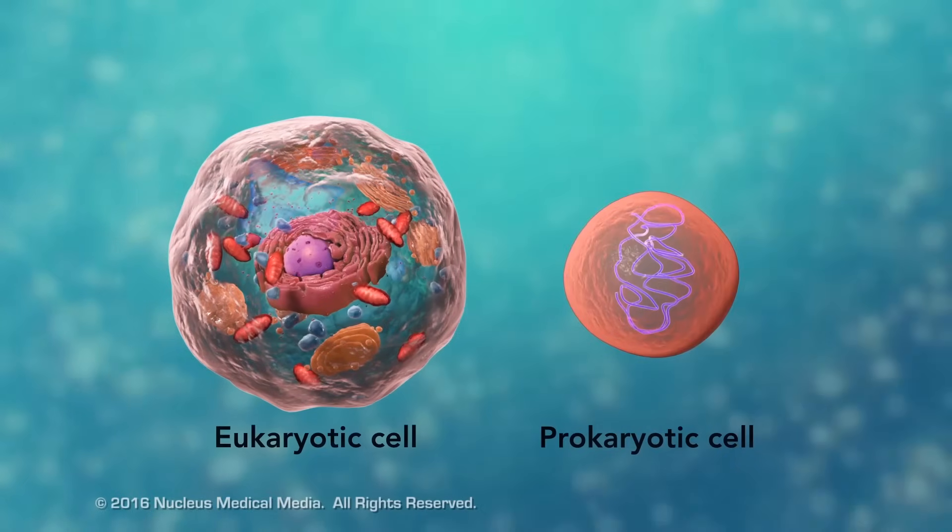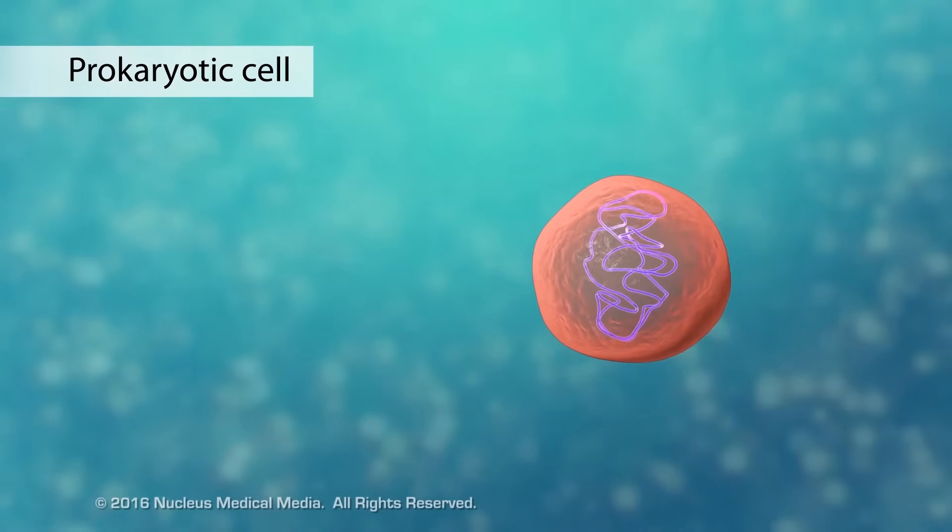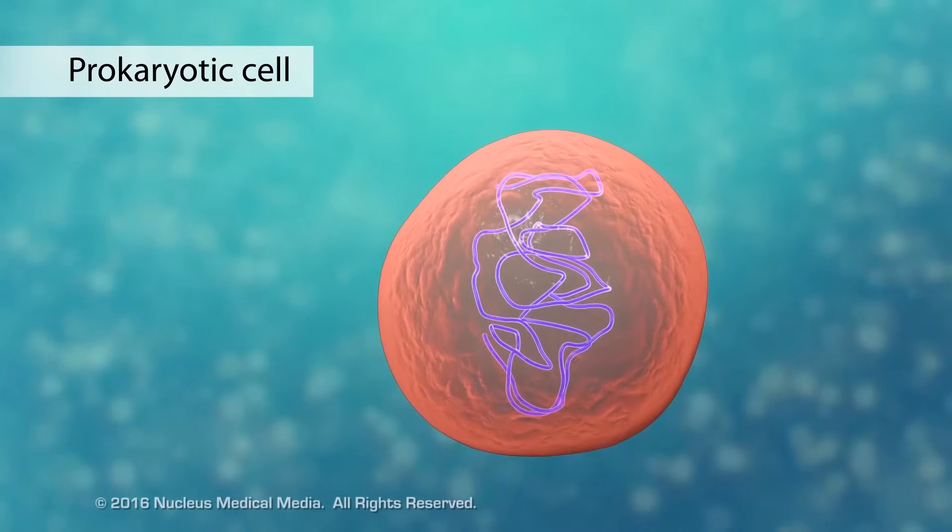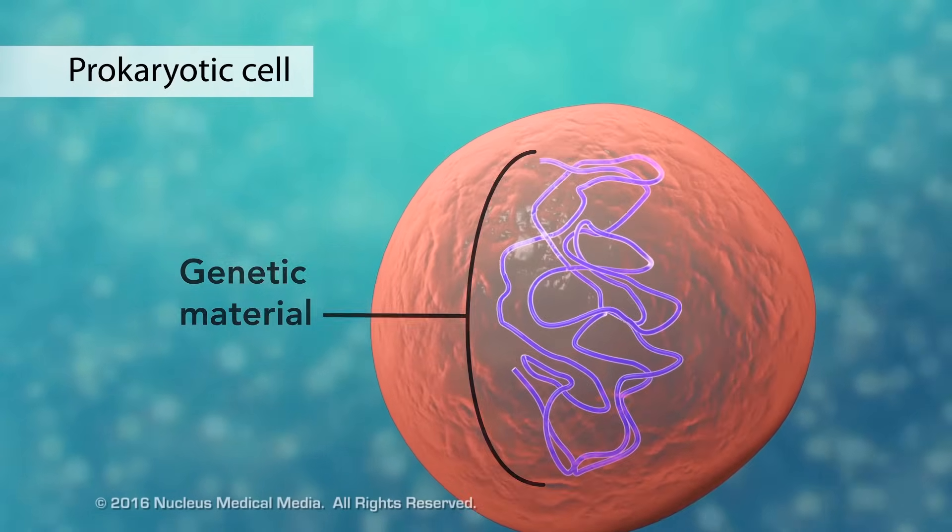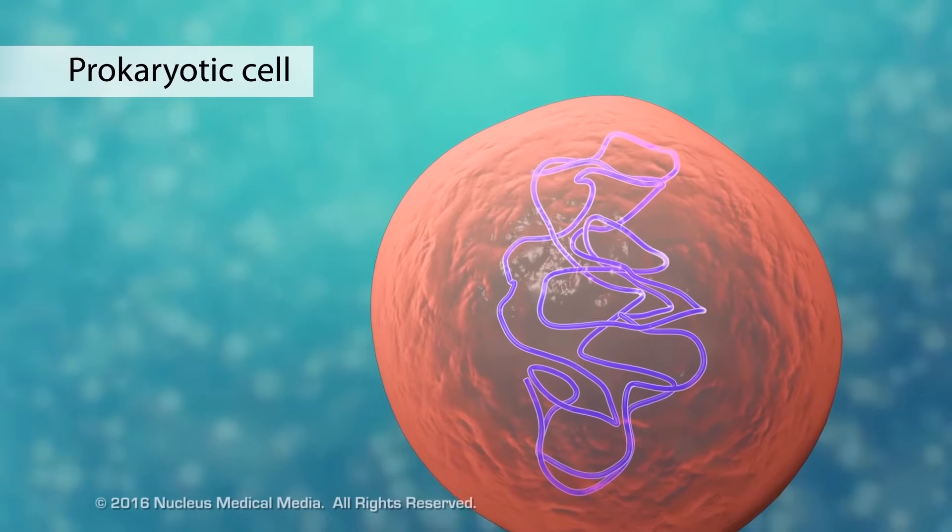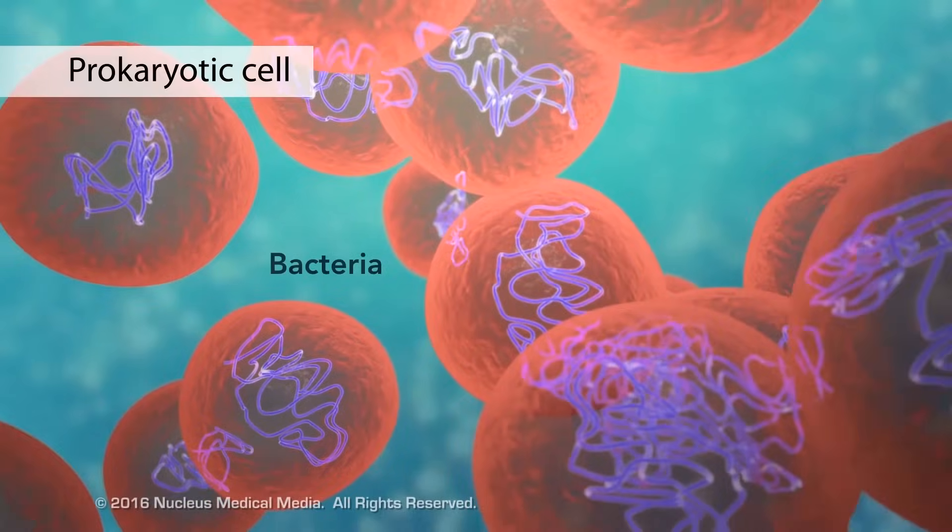The second category is prokaryotic cells. They don't have a nucleus or membrane-enclosed organelles. They do have genetic material, but it's not contained within a nucleus. Prokaryotic cells are always one-celled or unicellular organisms such as bacteria.